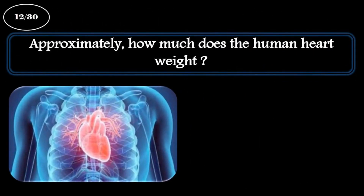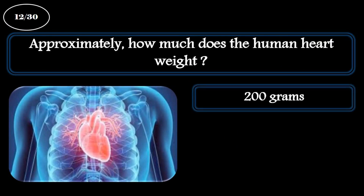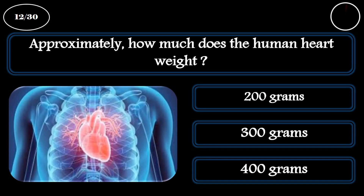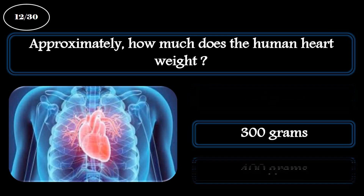Question 12. Approximately how much does the human heart weigh? A: 200 grams. B: 300 grams. C: 400 grams. The correct answer is 300 grams.